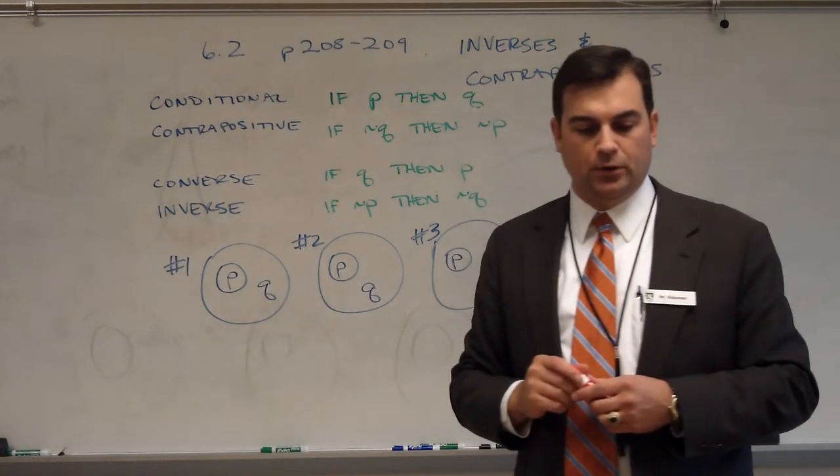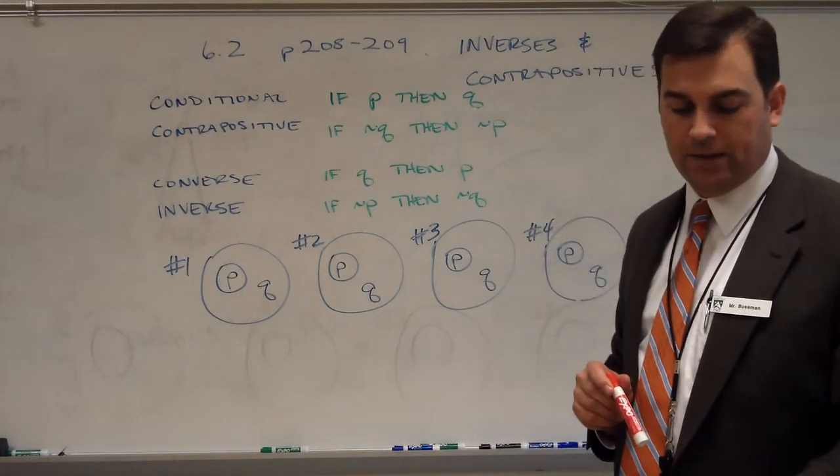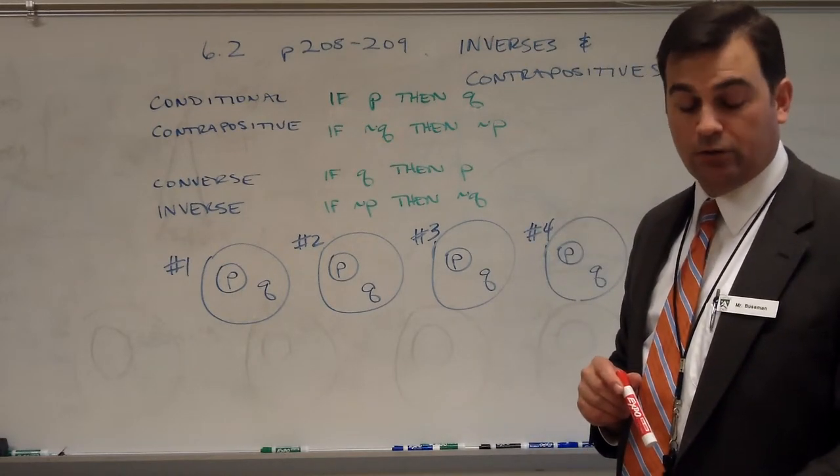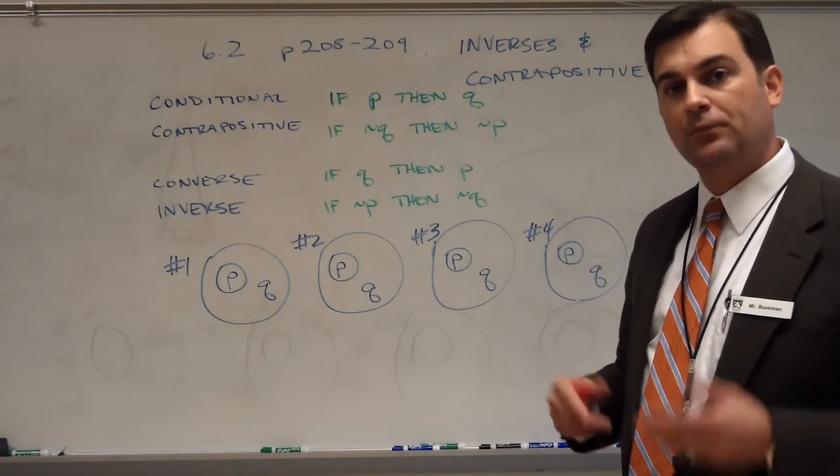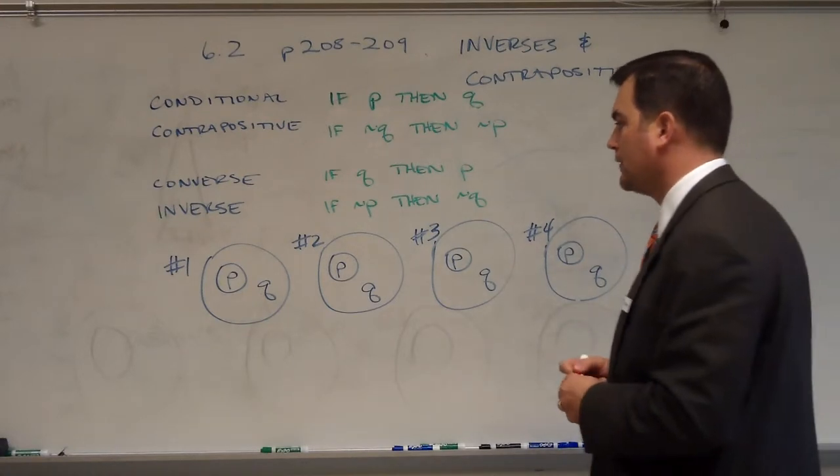So now let's look at the four examples that are in the book. In the first example, number one, we are told that all runners are athletes, and Leroy is a runner. What conclusion can we draw?